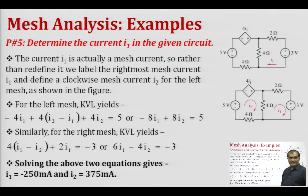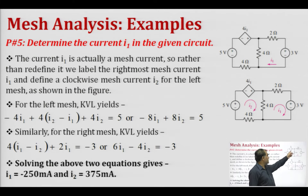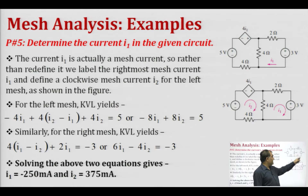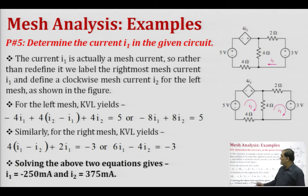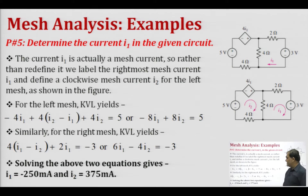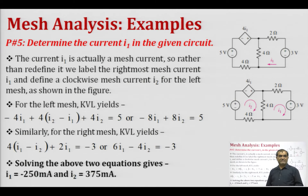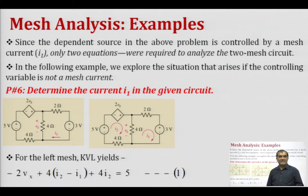When the circuit contains a dependent source, such as a dependent voltage source of magnitude 4·i1 where i1 is the mesh current in the left mesh, we label the rightmost mesh current i1 and define a clockwise mesh current i2 for the left mesh. We write KVL for the two meshes and solve those equations to get i1 = −250 milliamperes and i2 = 375 milliamperes. Since the dependent source was controlled by a mesh current, only two equations were required.